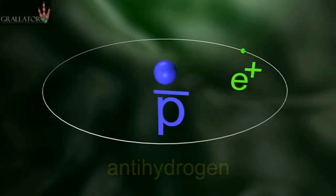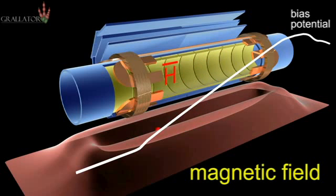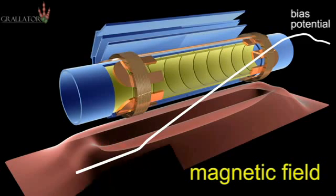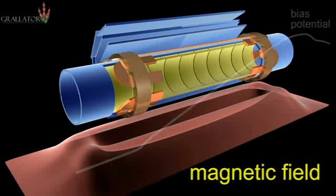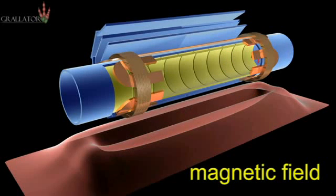So if that antihydrogen is formed and it's slow enough, it will stay in this magnetic bathtub. You can see it at the bottom. This is the potential that's used to hold the antihydrogen atom. So if it's less than 0.5 Kelvin above absolute zero, it'll stay there.